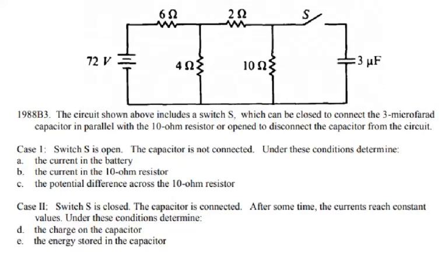This question is from AP Physics B 1988, and these sections are now covered in AP Physics 2. In this question, the circuit shown includes a switch S which can be closed to connect the three microfarad capacitor in parallel with a 10 ohm resistor, or open to disconnect the capacitor from the circuit.